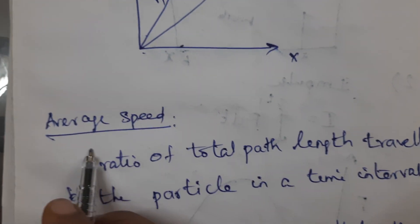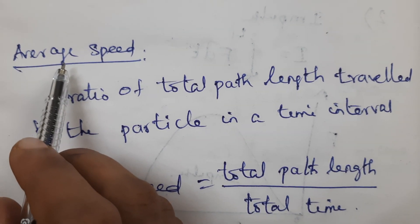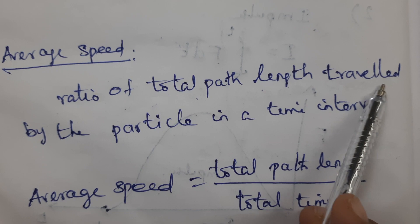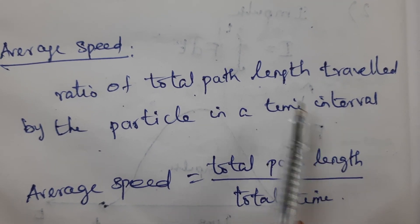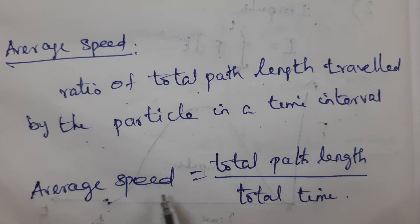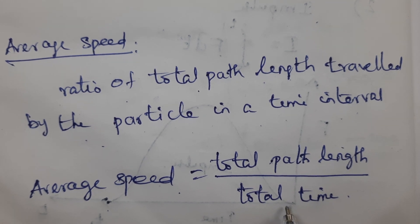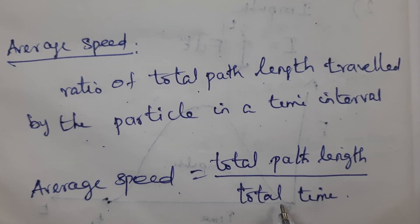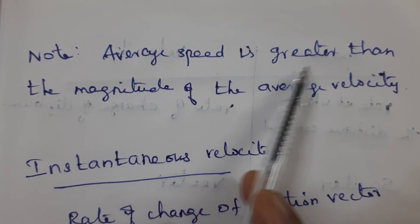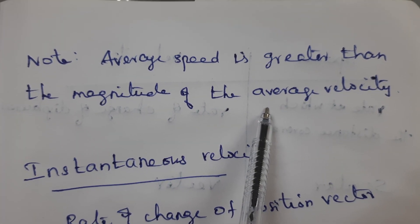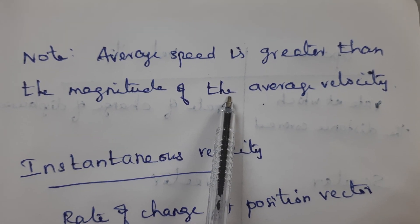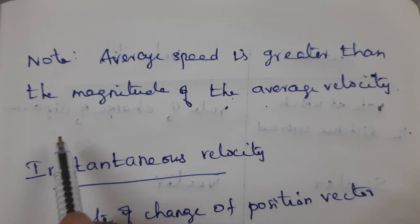The next one is average speed. Average speed is defined as the ratio of total path length traveled by the particle to the time interval. So average speed = total path length / total time. An important point: average speed is greater than the magnitude of average velocity. For this, try example 2.20 from the book.